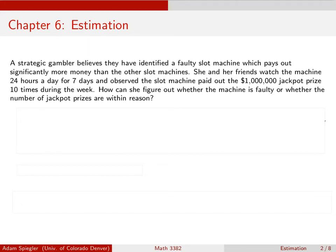Let's say a strategic gambler thinks they have identified a slot machine which pays out more than it should—it pays out more money than the other slot machines. So how can they come up with a way of gauging whether that is so?